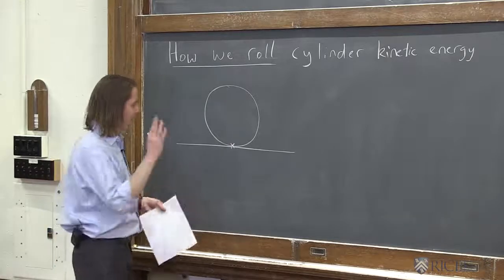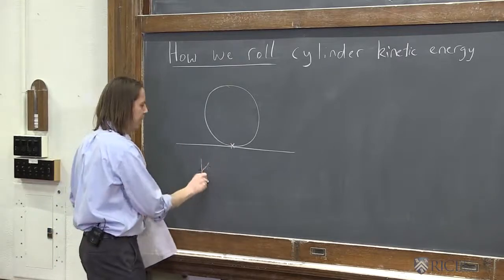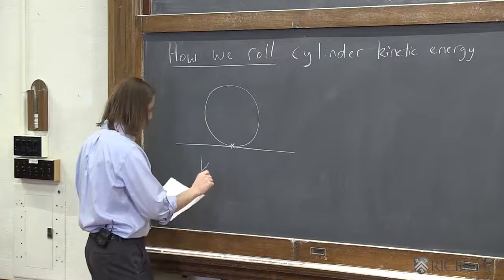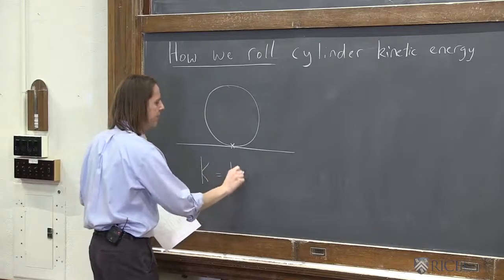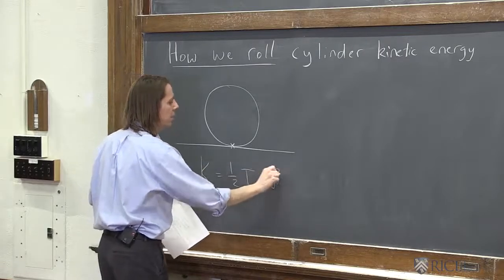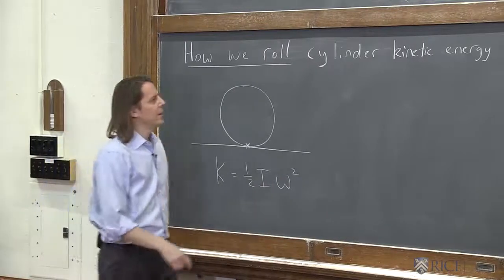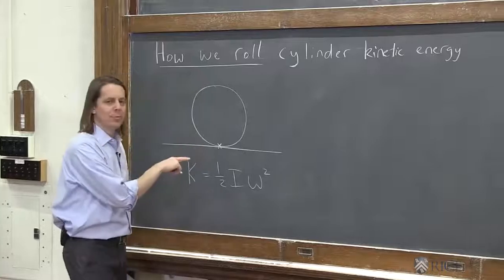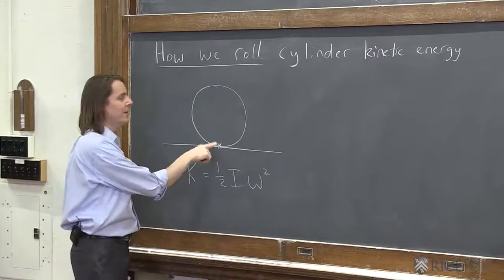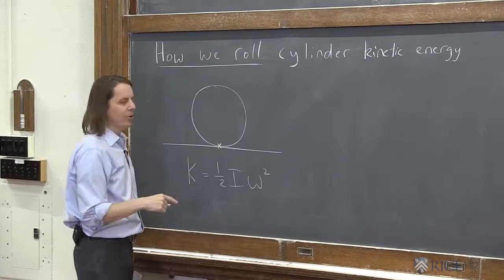So we look at it, and we say, well, if it's pure rotation, we're just going to think about the rotation, then the kinetic energy is 1/2 I ω². So let's now think about what is the moment of inertia around that point. And this is where we need the parallel axis theorem.